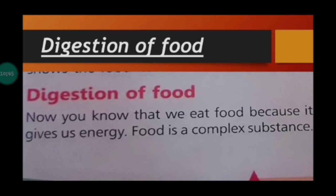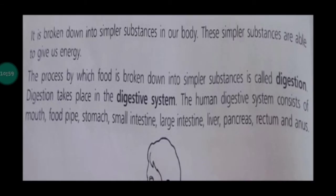Digestion of food. Now you know that we eat food because it gives us energy. Food is a complex substance. It is broken down into simpler substances in our body. These simpler substances are able to give us energy. The process by which food is broken down into simpler substances is called digestion.